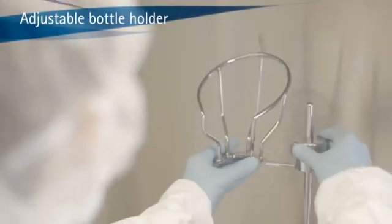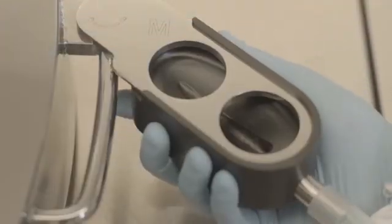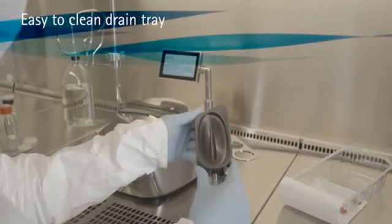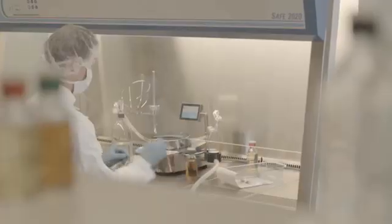You can also adjust the height and angular position of up to 2-liter bottles. Another important feature is the drain tray, which we designed to minimize splashing so no droplets go back to the canister.